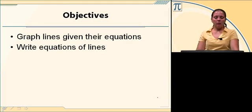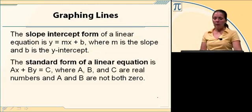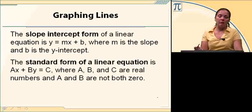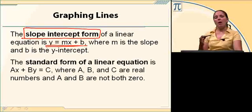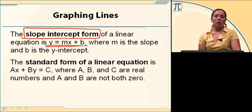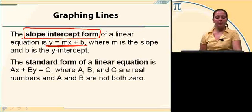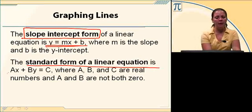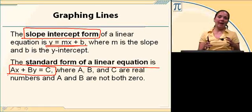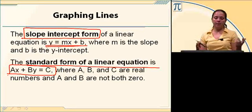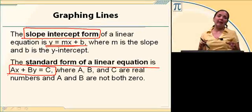The objectives for this lesson are to graph lines given their equations and to write equations of lines. Let's talk about some different forms that equations of lines come in. We have slope-intercept form: Y equals MX plus B, where M is the slope and B is the Y-intercept, or the point where the line crosses the Y-axis. Standard form of a linear equation is AX plus BY equals C, where A, B, and C are all real numbers. A and B both can't be 0, A should generally be a positive number, and A and B should be integers.